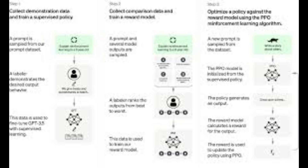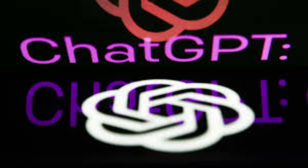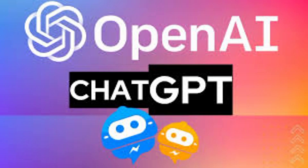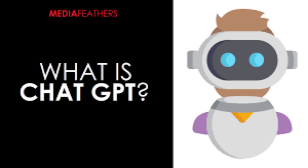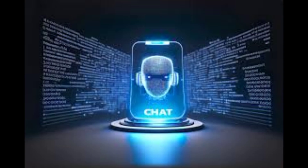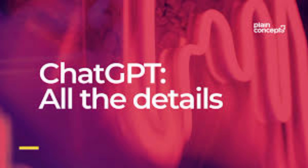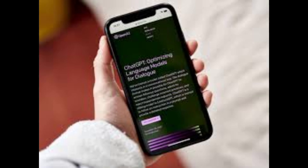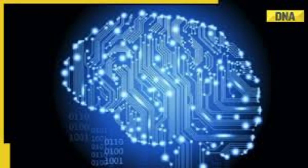ChatGPT is also used in research, particularly in the field of natural language processing, where it can help researchers better understand human language and improve the accuracy of machine learning models. OpenAI has also created a number of tools and services built upon ChatGPT, including the OpenAI API, which allows developers to access the power of ChatGPT in their own applications. The GPT-3 Playground is another tool that allows users to experiment with ChatGPT and explore its capabilities.